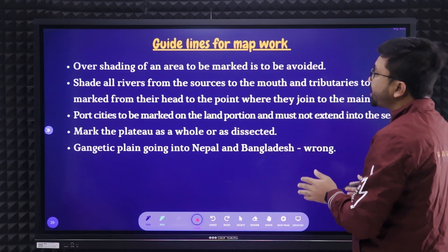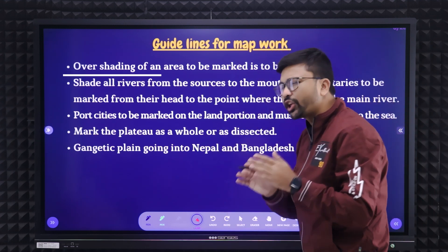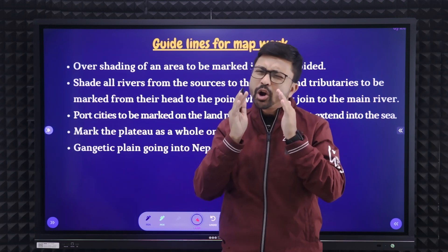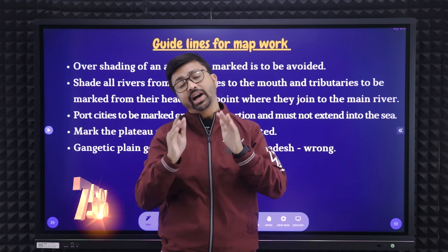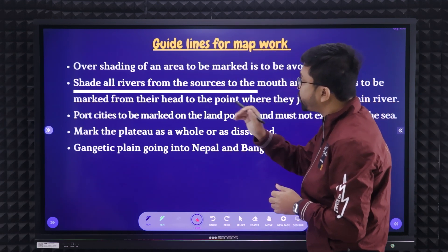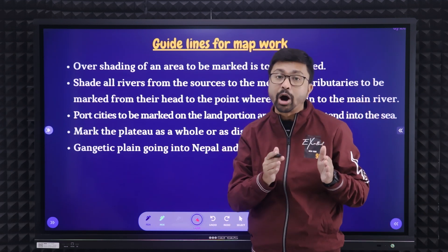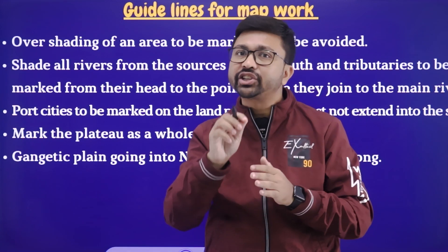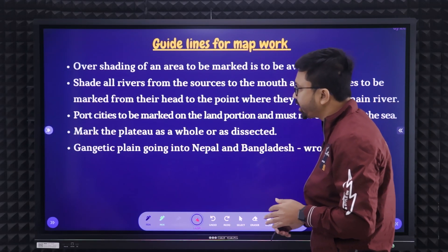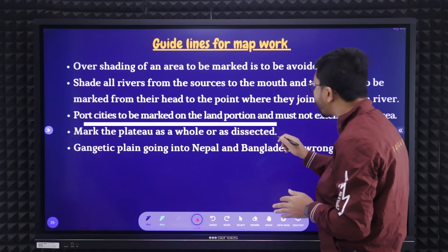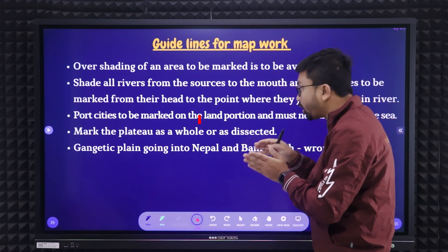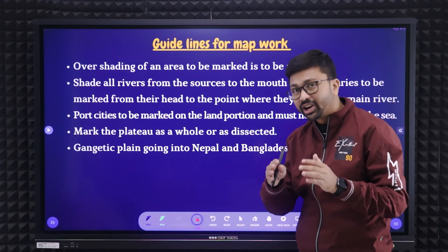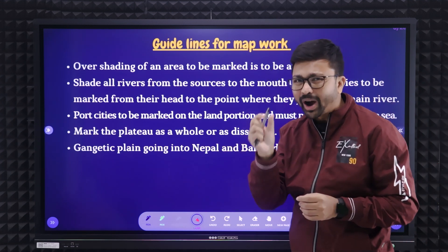Some other guidelines: overshedding you should not do. If you shade at least 75% of the area, that is also fine and you will get marks. Shade the river from source to river mouth — from the starting point to the end point. The river name you should mention over the Indian part only. Port cities to be marked with the land portion only, not in the water bodies. You can mark the plateau whole or dissected — everything is fine. We will discuss all of that later, topic by topic.